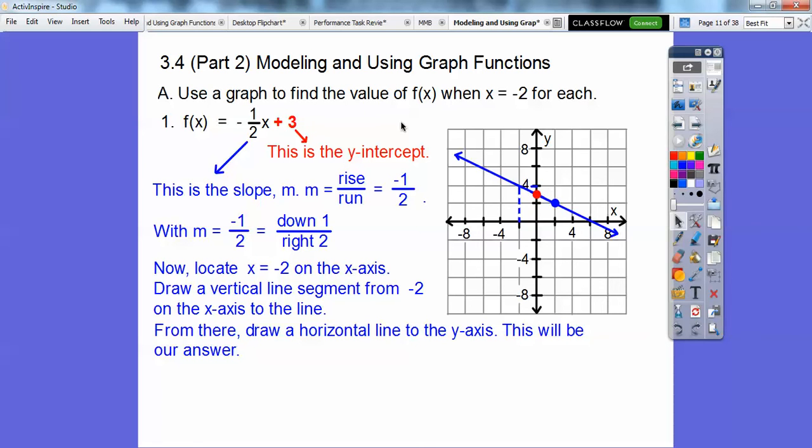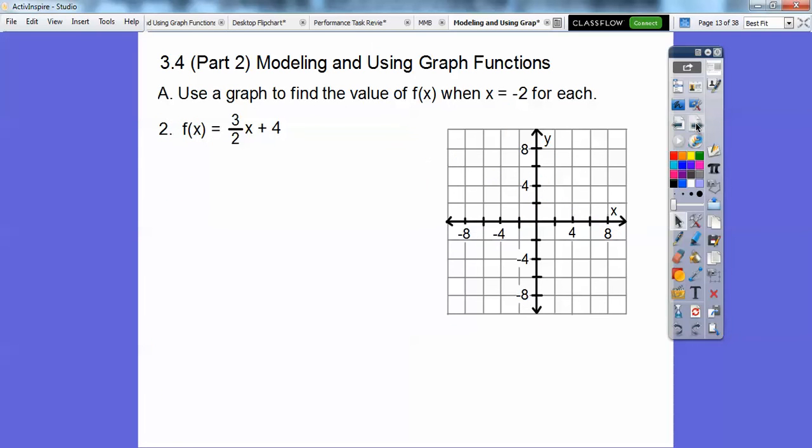So when we're looking to find the value of f of x, which remember f of x just equals y, so where does it hit on the y-axis right here? Here's x equals negative 2. Go up to the graph and go straight over. Tells you how much it goes up. It goes up to 4. So that's our answer. f of negative 2 equals 4 right there. Let's try another one.